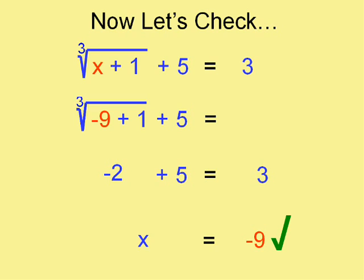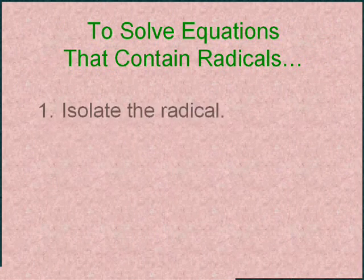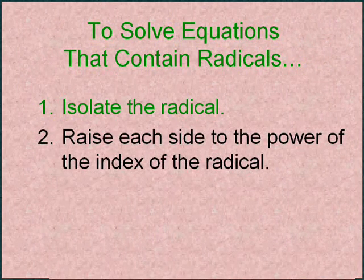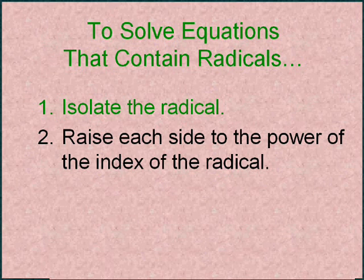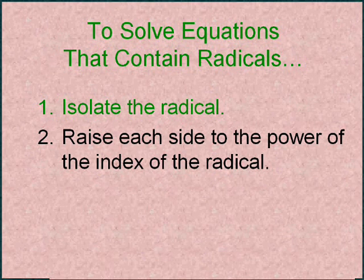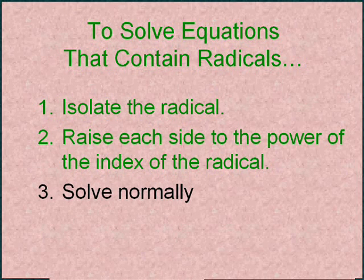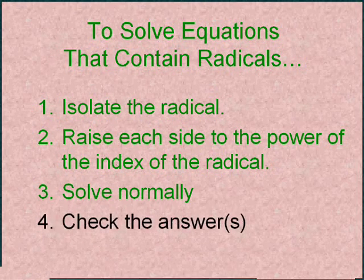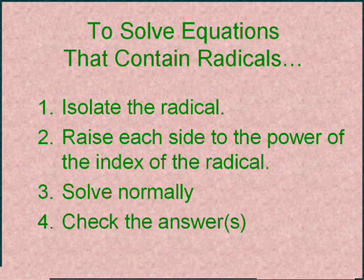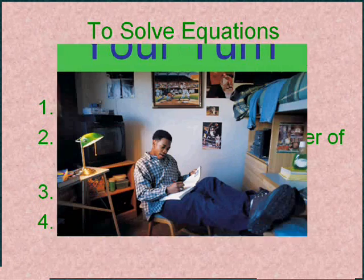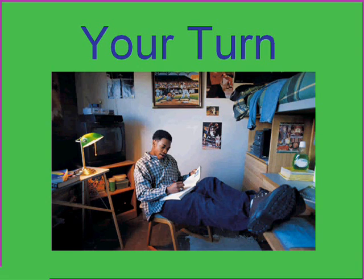So we don't always square — what we always do is raise each side to the index of the radical; that's the secret. To summarize: isolate the radical, raise each side to the power of the index of the radical, then solve normally, then check the answer. Okay — it's your turn. Let's get to that homework.